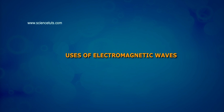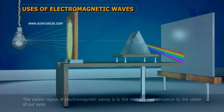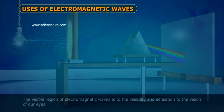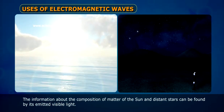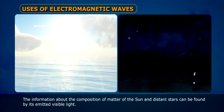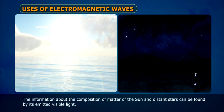The visible region of electromagnetic waves is responsible for visibility and sensation to the vision of our eyes. The information about the composition of matter of the sun and distant stars can be found by its emitted visible light.